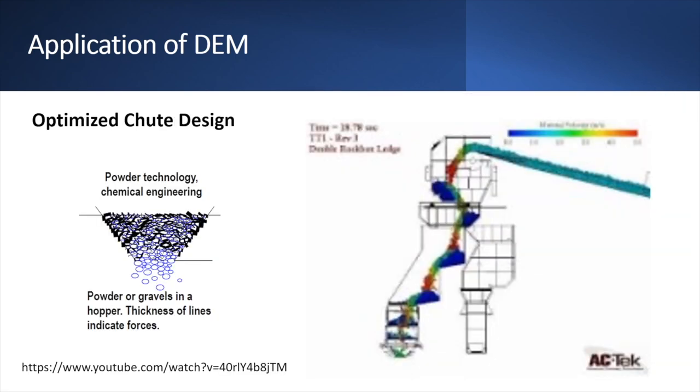And last but not the least example of DEM application is optimized chute design. We see all the gravels or particles that are falling apart of this chute how these how their speed by time are changing to a stable condition going from one level to another level.